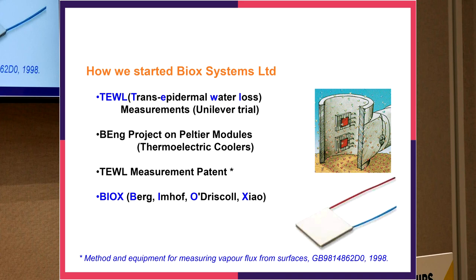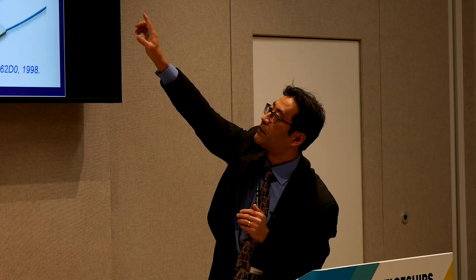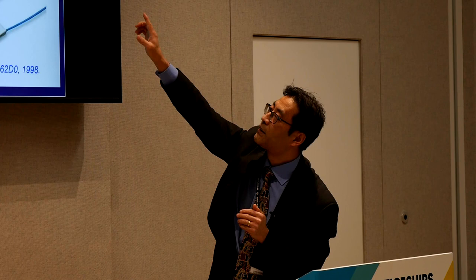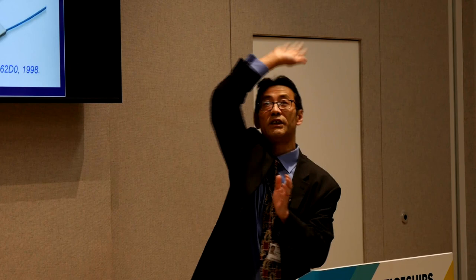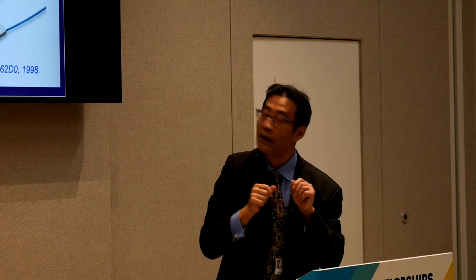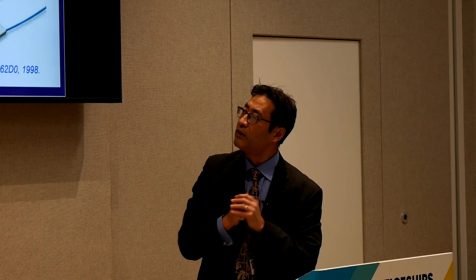At that time, we were using a German company's device — an open-chamber device with two humidity and temperature sensors measuring the vapour gradient above the skin. The trouble with this open-chamber approach is that it's terribly inaccurate and subjected to the external environment. We had to find a small sealed room, seal the air conditioning, not open doors during measurement, and not even look at it, because the air you breathe out would affect the measurement.